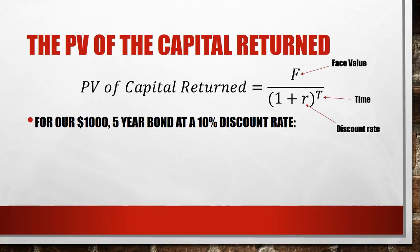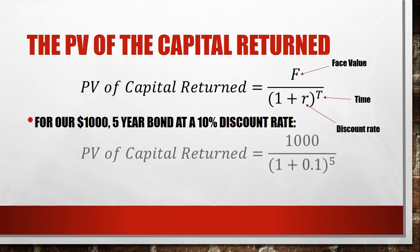So we've got a thousand-dollar, five-year bond at a ten percent discount rate. We take each of these three things and put them in the equation: we replace the face value with a thousand, the discount rate with 0.1, and T with five. You just press the numbers on your calculator and it comes out that the present value of the capital return is six hundred and twenty dollars and ninety-two cents. We're halfway to calculating the value of the bond.